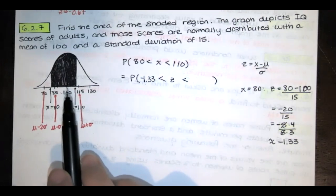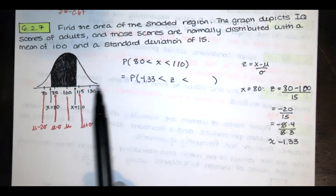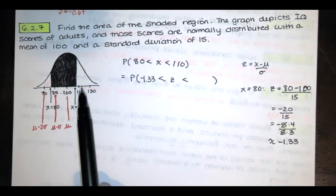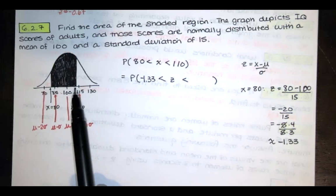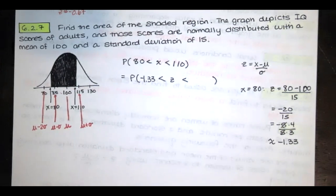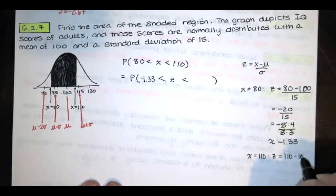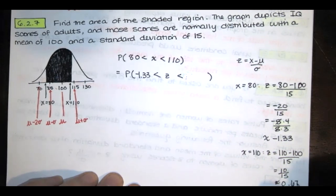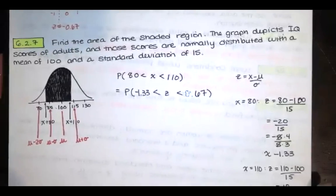Now let's do the same thing for 110. Now notice that 110 is between this 100 and the 115. Now 115 is one standard deviation above the mean. So 110, I would expect that to be somewhere between zero standard deviations and one standard deviation. And since we're going like 10 units in the direction of something that's 15 units long, I bet that that's two thirds or 0.67. But let's work that out. So we'll have 110 minus the mean divided by the standard deviation. So we've got a deviation of 10 from the mean. We divide by the standard deviation and that's two thirds, which is approximately 0.67.